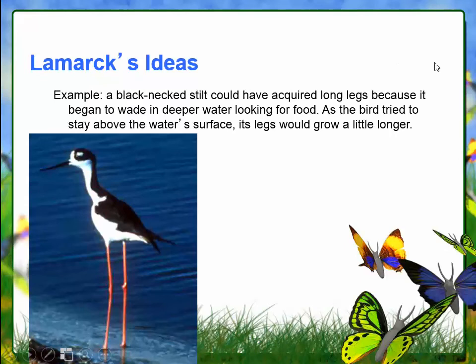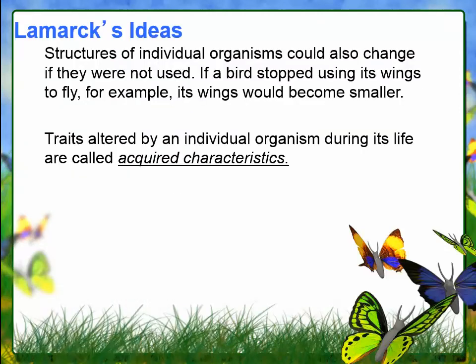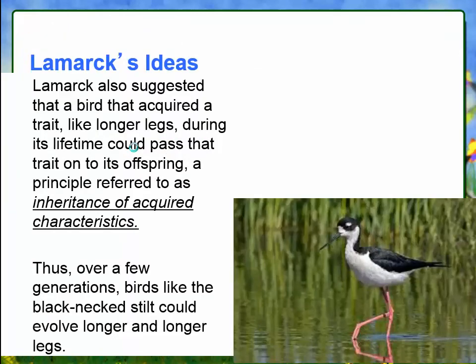One example of Lamarck's ideas is that a bird could acquire long legs because it was in deep water looking for food — the more it was in deep water, its legs grew longer to help it stay there. Any trait altered by use or disuse in an individual was called an acquired characteristic. Lamarck also said that if this bird acquired longer legs, its offspring would also have long legs — called the inheritance of acquired characteristics. Thus, over a few generations, birds could evolve longer and longer legs.